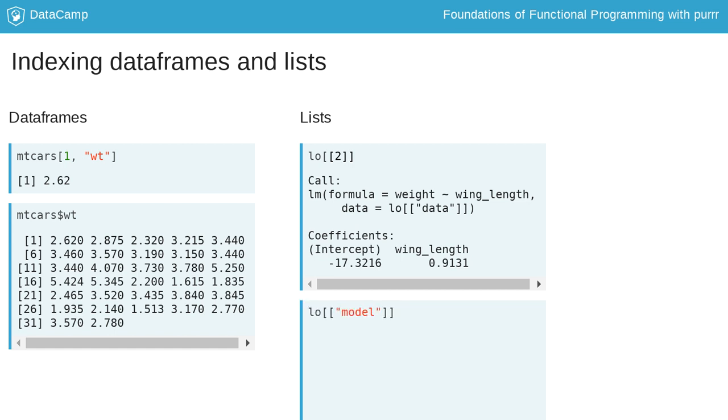Second, if a list is named, we can put the name of the element in the double square brackets to index a particular element. Here we are subsetting out the model element of the LO list.